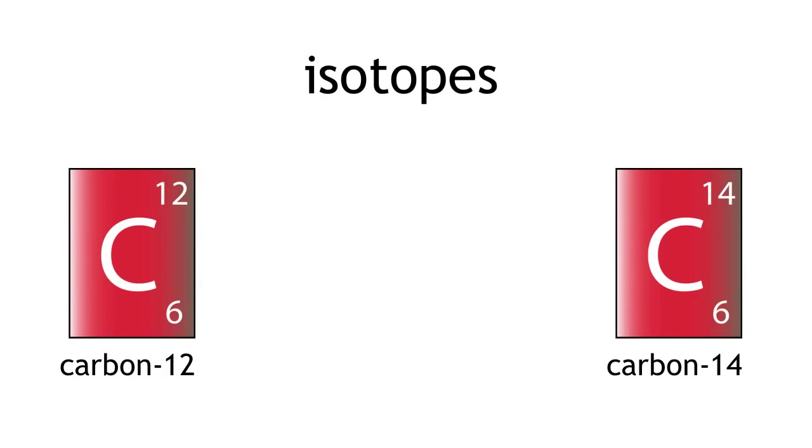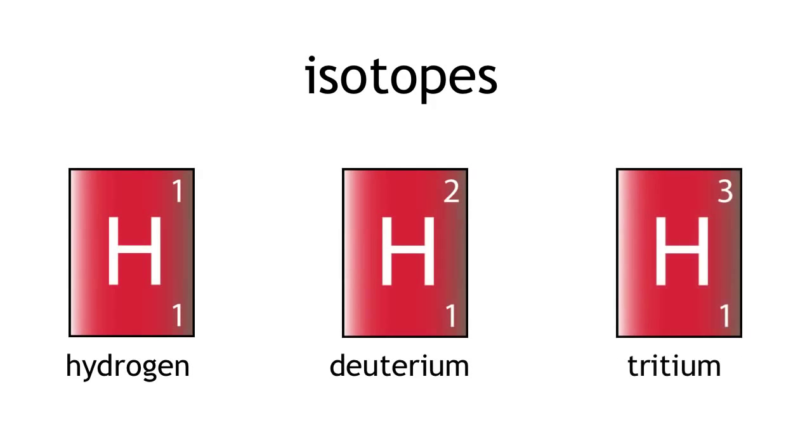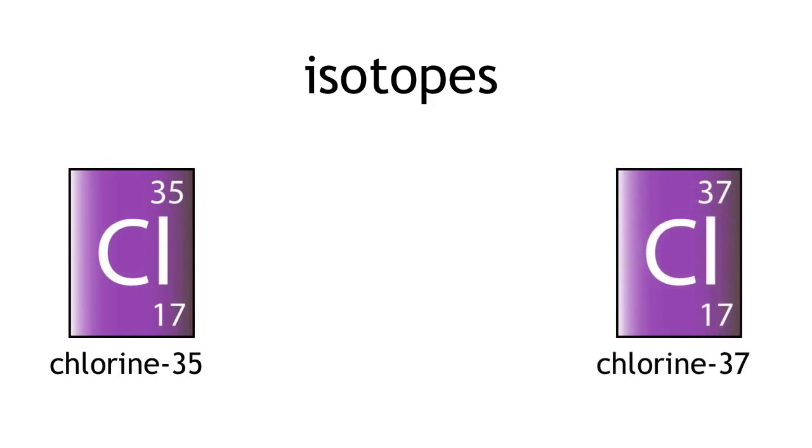Carbon-12 and carbon-14 are not the only examples of isotopes. There are many more such as hydrogen, deuterium, tritium and chlorine-35 and chlorine-37.